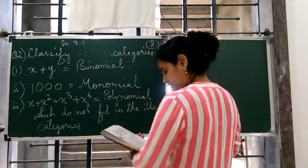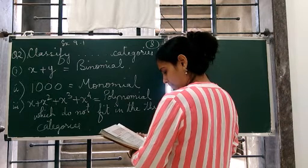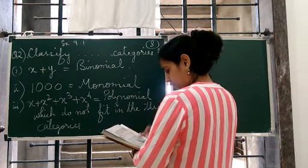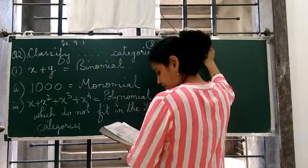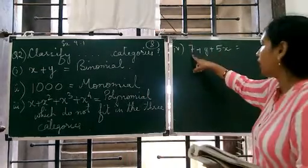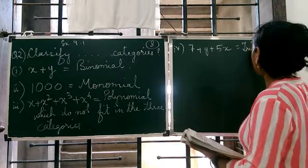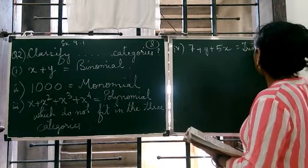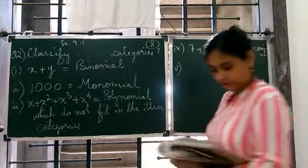Then the fourth one, which one is the fourth one? Seven plus y plus, because we have not written the number. Seven plus y plus five x. How many terms, children? One, two, three. So it's a trinomial.